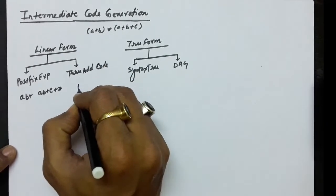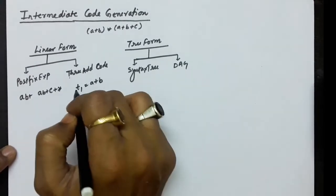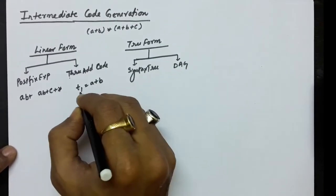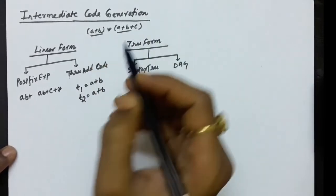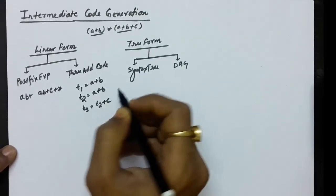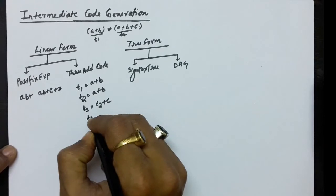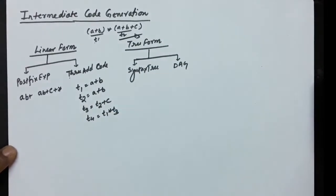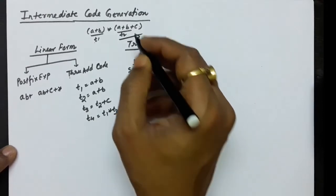In the three-address code form, each instruction has three addresses. For example: t1 = a + b, then t2 = a + b again for the second occurrence, then t3 = t2 + c, and finally t4 = t1 * t3. This is how the expression can be represented in three-address form.